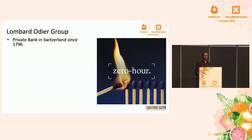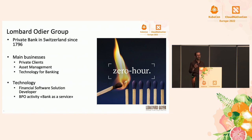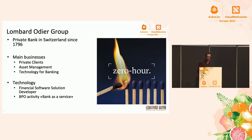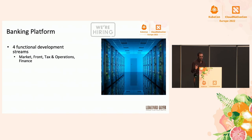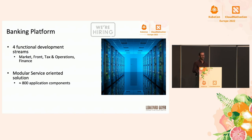Lombard Odier is a private bank based in Switzerland. We've got the traditional lines of business you would expect, plus something we call technology for banking. We develop internally our own core banking system, which we make available to the bank itself but also to external clients. We have traditional functional development streams and a very modular architecture started 25 years ago with many technologies. The last 15 years we invested heavily on Java, and we've got a lot of flexibility in our system thanks to this architecture, but a few challenges as well.